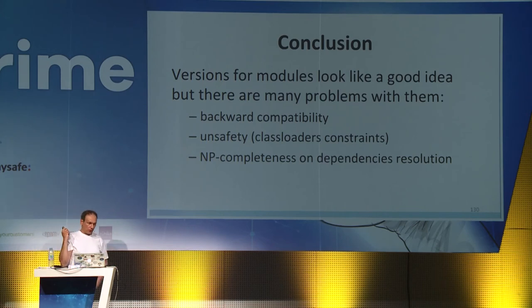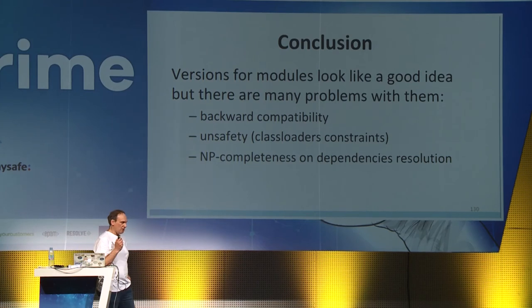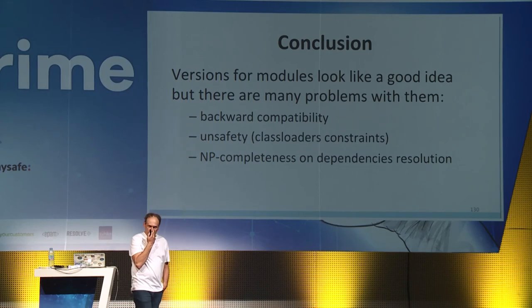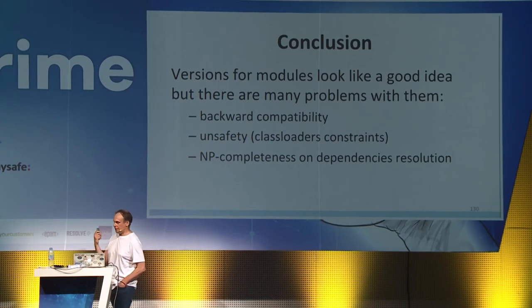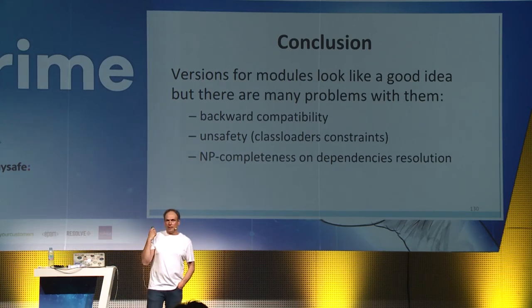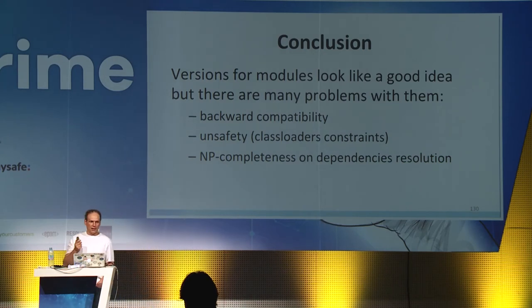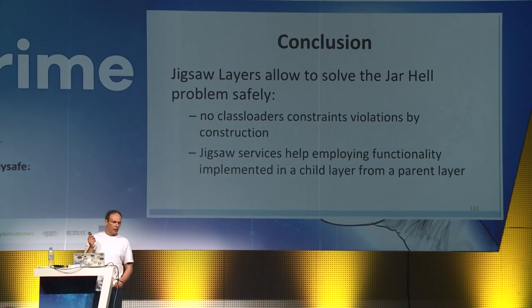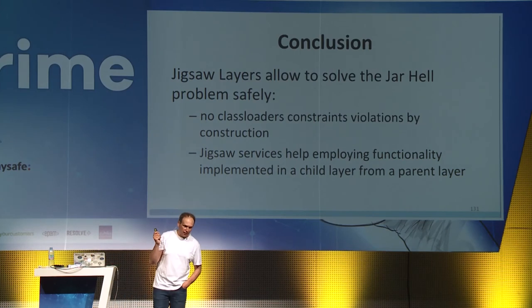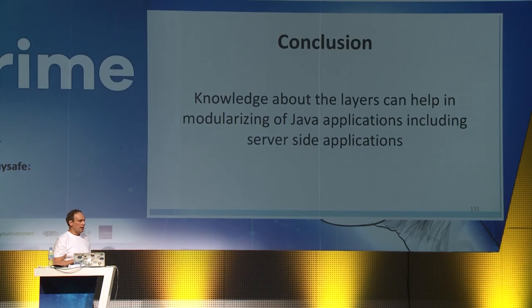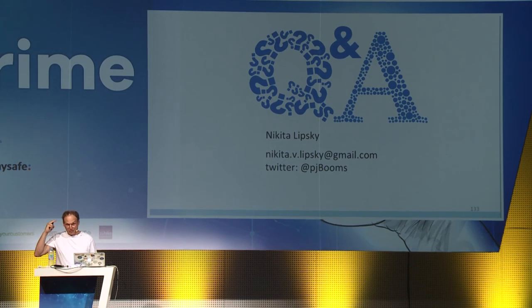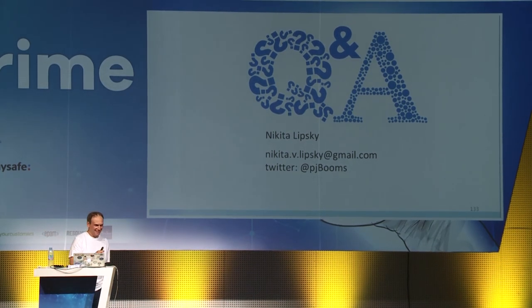That's all for today. Let's sum up what we've learned. Versions for modules look like a good idea, but there are many problems with them: backward compatibility problems, difficulty using versions safely because of class loader constraints, and NP-completeness of version resolution being a show-stopper for them appearing in the Java standard. On the other hand, Jigsaw layers allow solving the jar hell problem safely because class loader constraint violations are impossible by construction. Jigsaw services help in employing functionality implemented in a child layer from a parent layer. Knowledge about layers can help you in modularizing Java applications including server-side applications. Thank you for your attention.